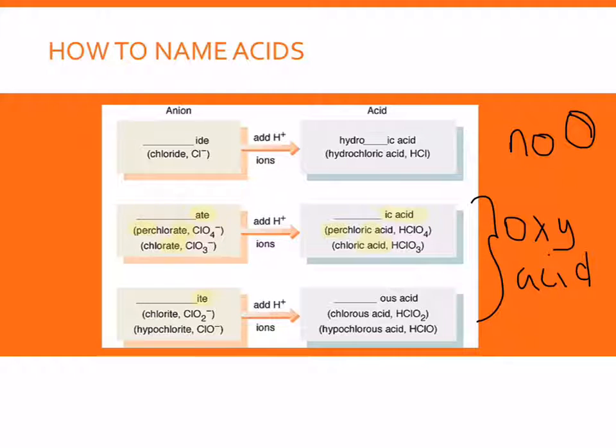If you have the -ite ion, you get the -ous acid. So chlorite gives us chlorous acid. And if we have the hypo-ite ion, we get the hypo-ous acid. So you are going to have to put those rules in your memory.